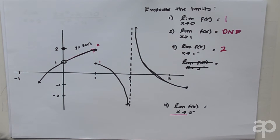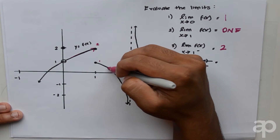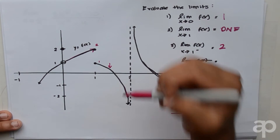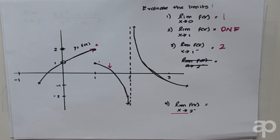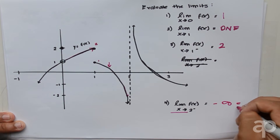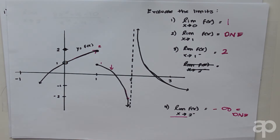The last graphical problem asks us to evaluate the limit of f of x as x approaches 2 from the left. If we approach 2 from the left using this piece of the piecewise function, we notice that the function goes down infinitely. This means the limit of f of x as x approaches 2 from the left is negative infinity, and we can call this DNE.